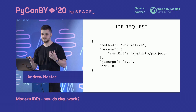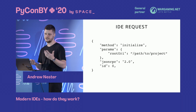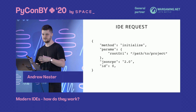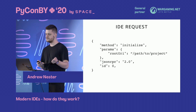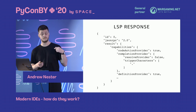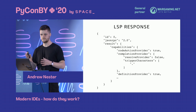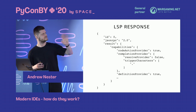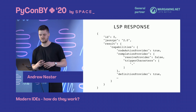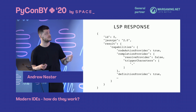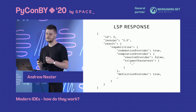Once the server is running, the IDE tells the LSP server which project the developer is working on. It sends a request called 'initialize,' and the only parameter you need to pass is the path to your project — telling the LSP server to start monitoring that project. The language server sends back a response, and the most important part of that response is 'capabilities.'